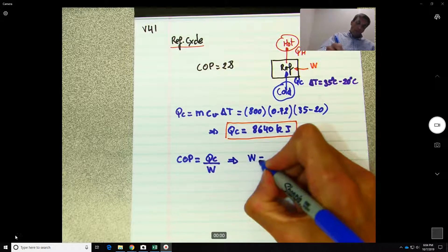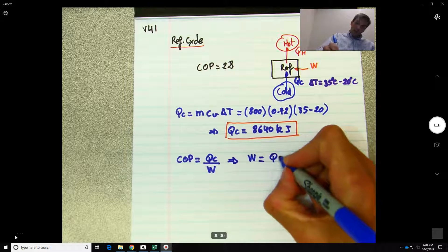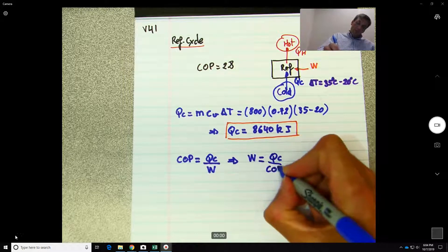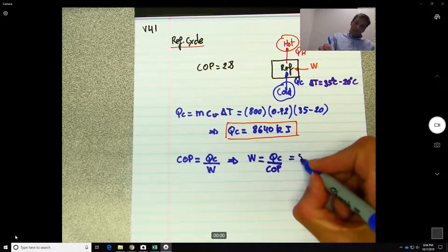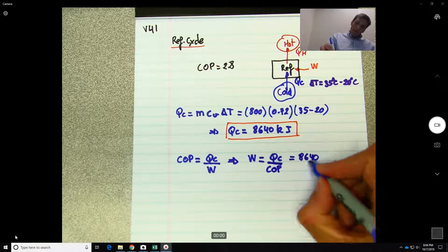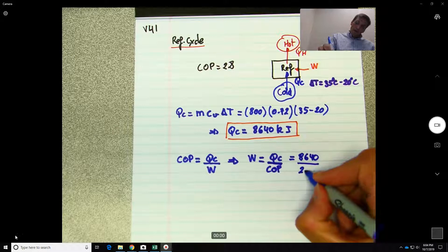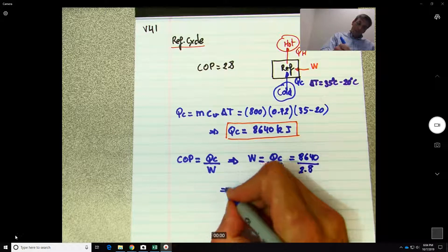So in this case, the work or power should be equal to what? The coefficient of performance, which is equal to Q_c divided by W. So W equals 8640 divided by 2.8. So the amount of work that we need to provide is 3085.714 kilojoules.